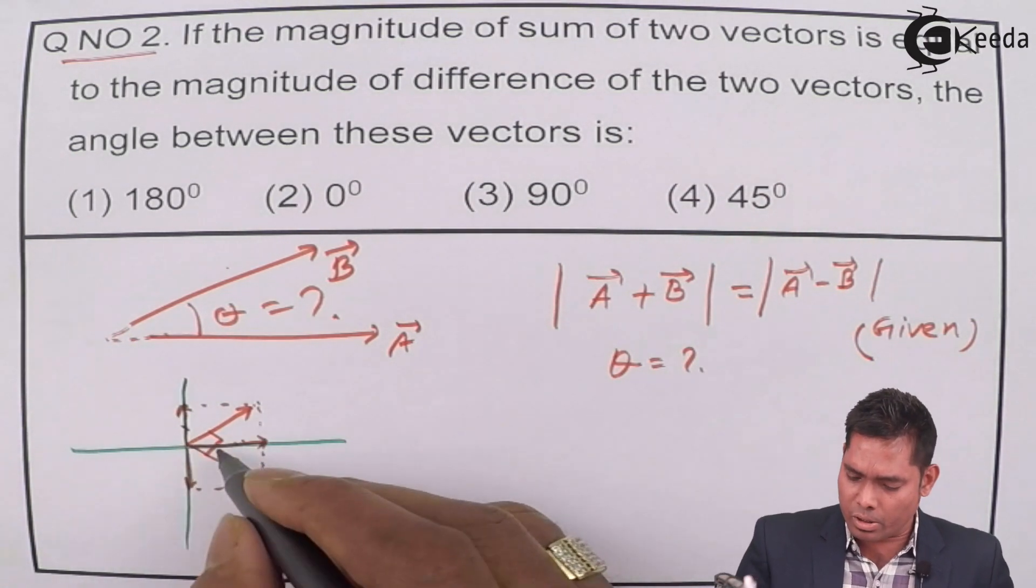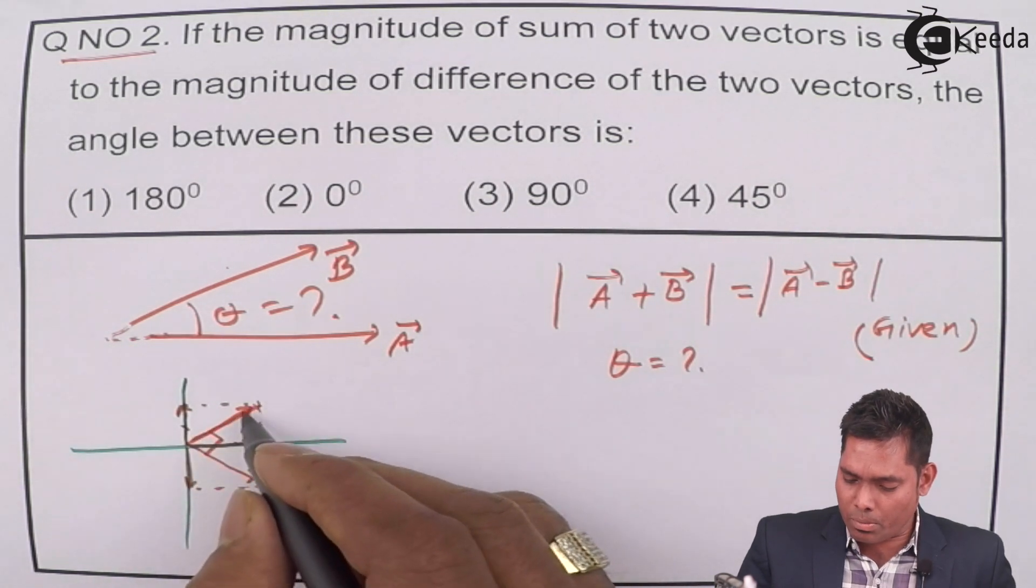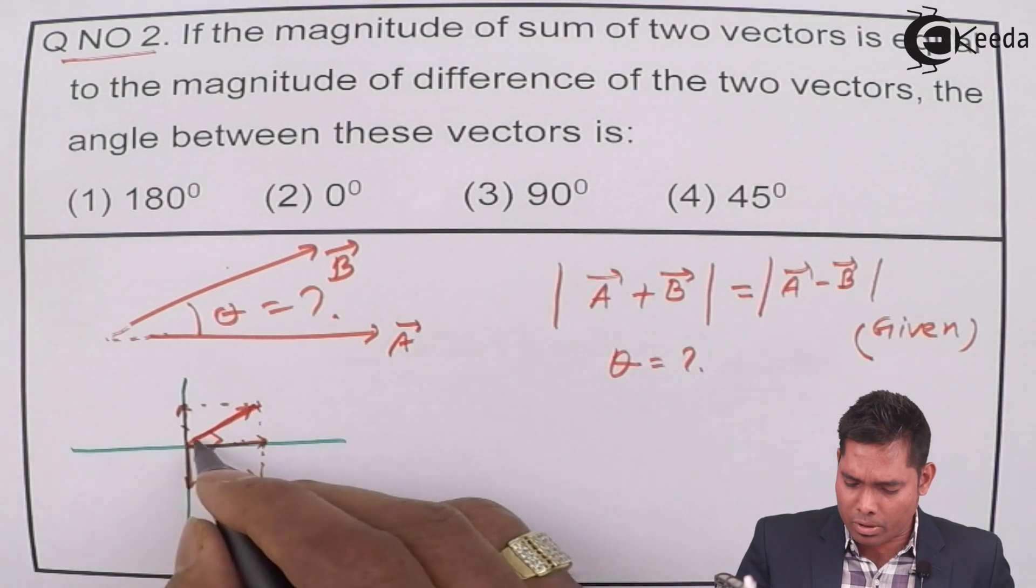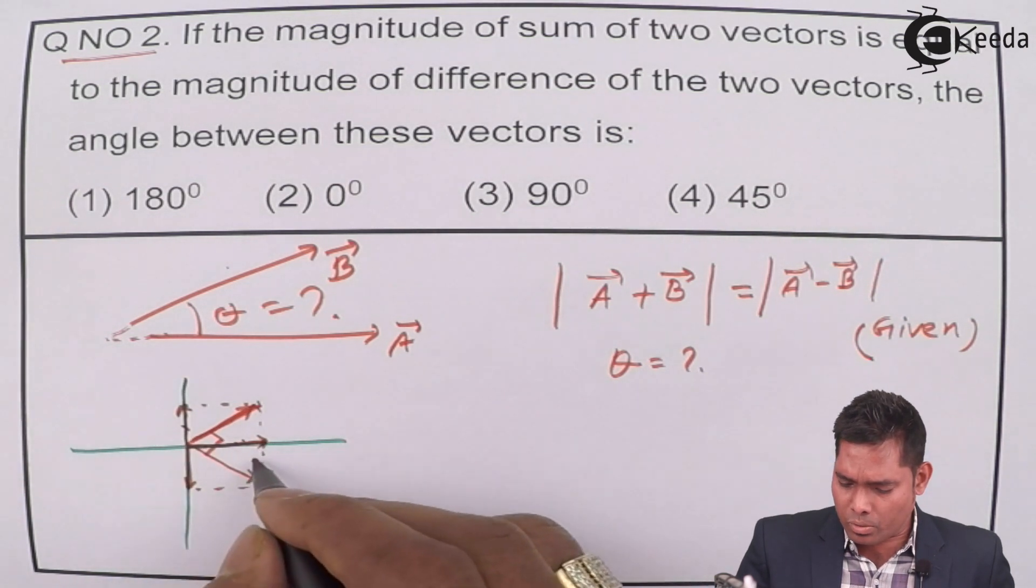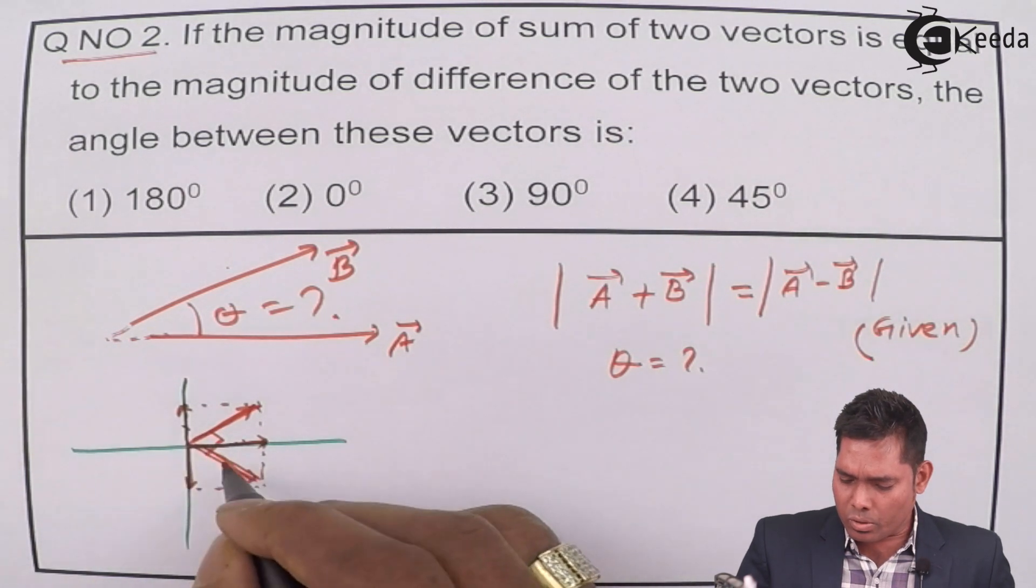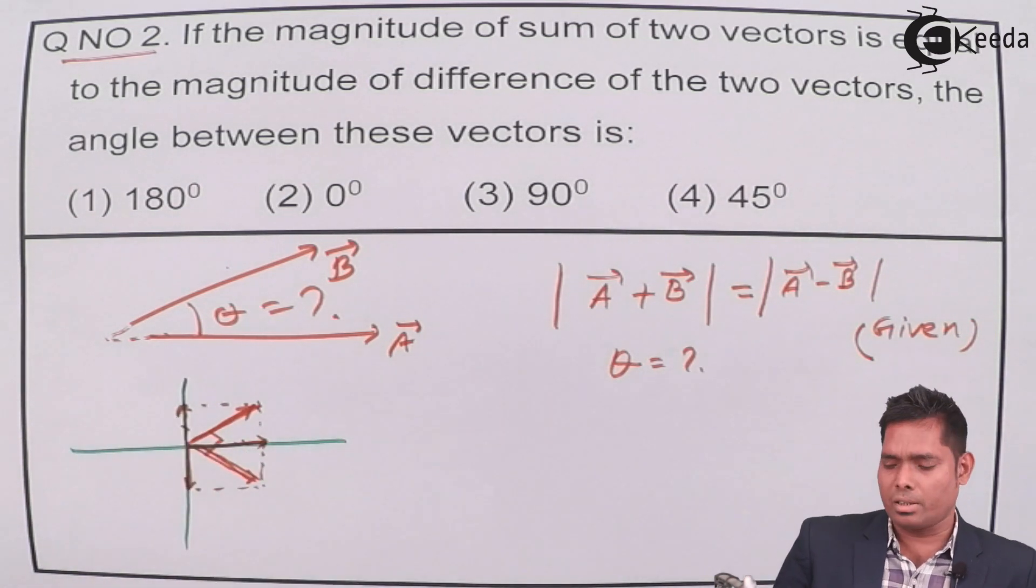And in that case only, it will be same. I have to keep the magnitude same. To keep the magnitude same, I have to keep this same. So only if the sign is reversed, this length will remain same. So this is possible only when the angle between the two vectors is 90 degrees.